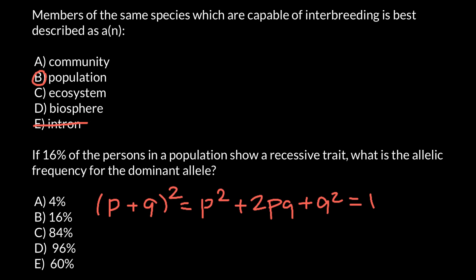In this formula, which we call Hardy-Weinberg equilibrium, let's say for allele P we have the dominant allele, and for Q we have the recessive allele. P squared stands for the homozygous dominant genotype, 2PQ stands for the heterozygous genotype.